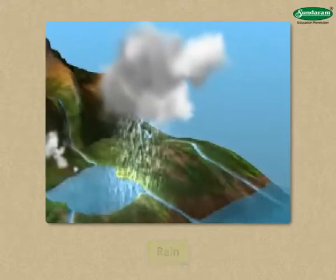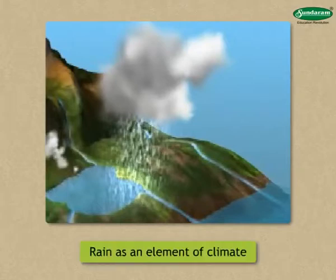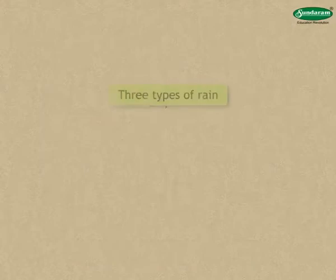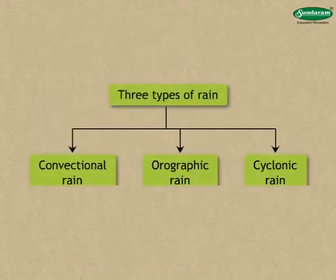In this lesson, we are going to learn about rain as an element of climate. There are three types of rain depending on the manner in which it occurs.